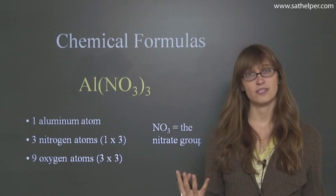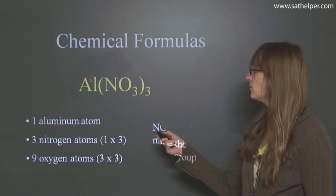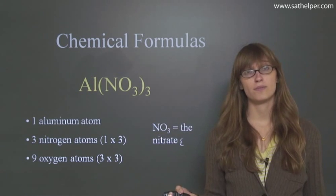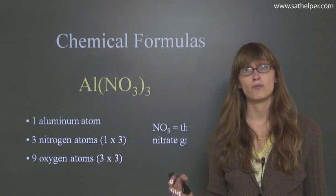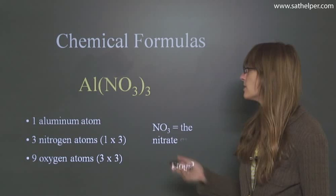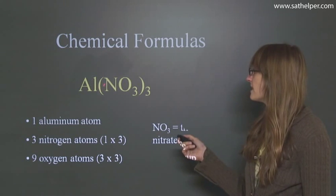How do we know how many atoms there are of each element? Well, first we look at aluminum, and we see that it has no subscript, so we know that it's an assumption of 1. So we have one aluminum atom.